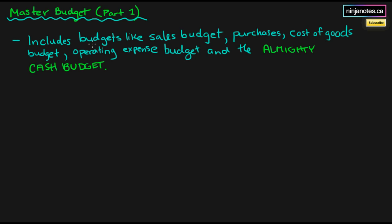What I've included here is what the master budget includes. Think of the master budget as being essentially this rectangle, and within this rectangle there are a bunch of separate budgets — like the sales budget, the purchases, the cost of goods sold, the operating expense, and the cash budget. The master budget includes all of these. It is the master file.